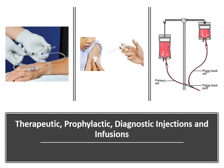Also on page 731, we have code 96368 for concurrent infusion, 96369 for a subcutaneous infusion. If the patient is getting an injection that's therapeutic, prophylactic, or diagnostic, we have code 96372.